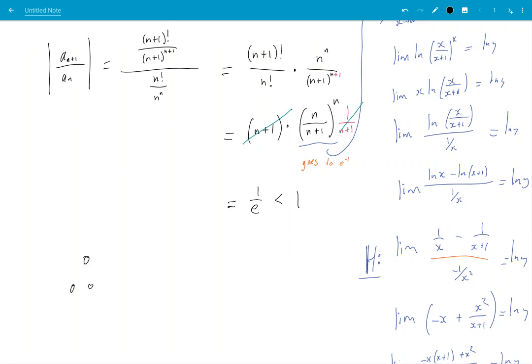Therefore, summation, summation, n factorial over n to the n is absolutely convergent.